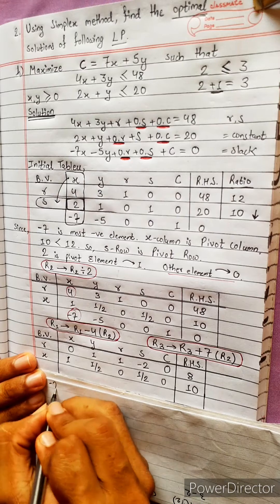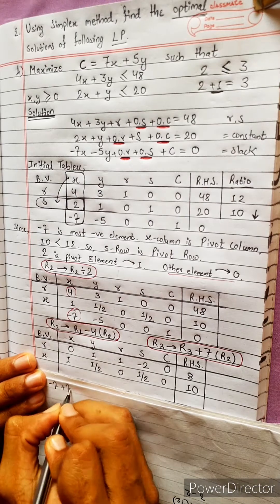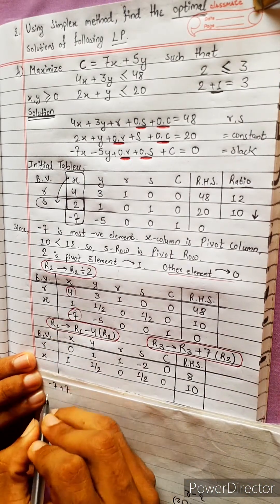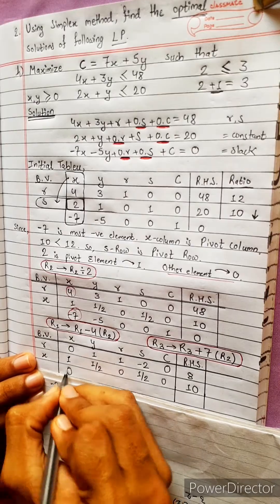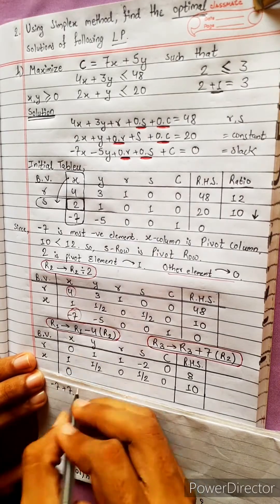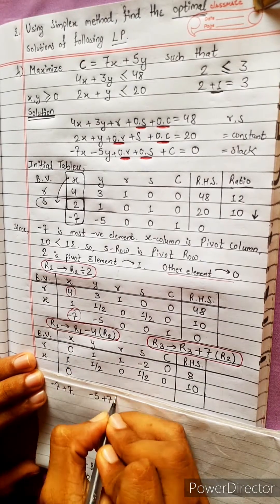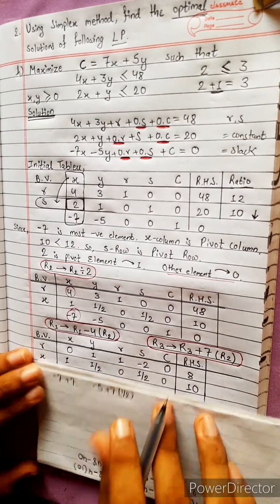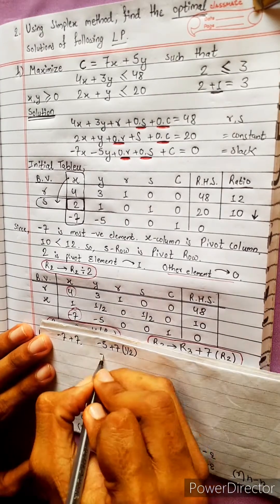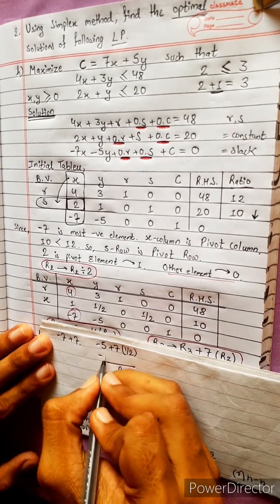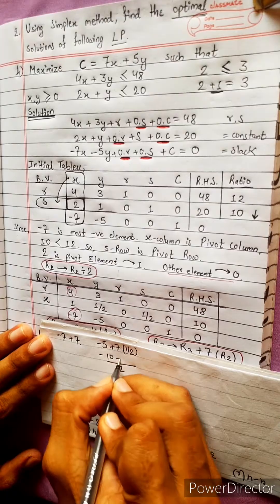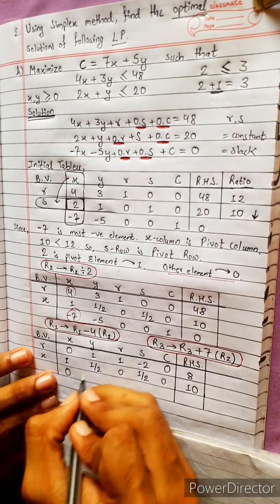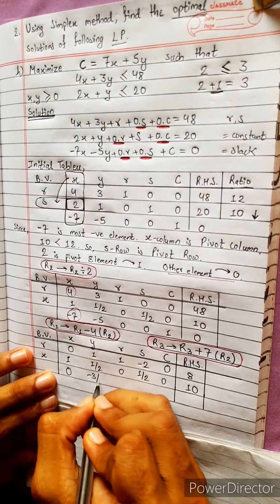R3 plus 7 times R2: minus 1, then 7 into 1. 7 minus 7 plus 7 equals 0. Now: minus 5 plus 7 times R2; R2 is 1 by 2. Minus 2 — R2 is 10 — plus 7 gives minus 3 by 2.